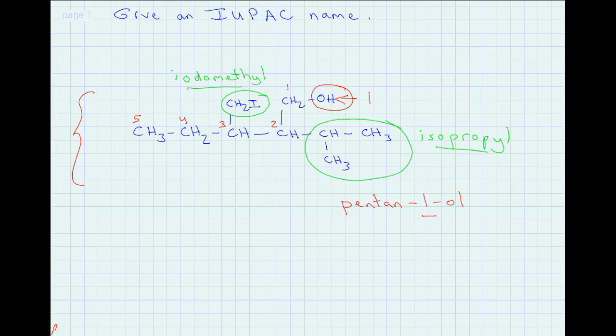In alphabetical order, iodomethyl comes before isopropyl. The iodomethyl group is at the three position, and the isopropyl group is on the second carbon. So we have something on the third carbon — the iodomethyl — and something on the second carbon — the isopropyl.